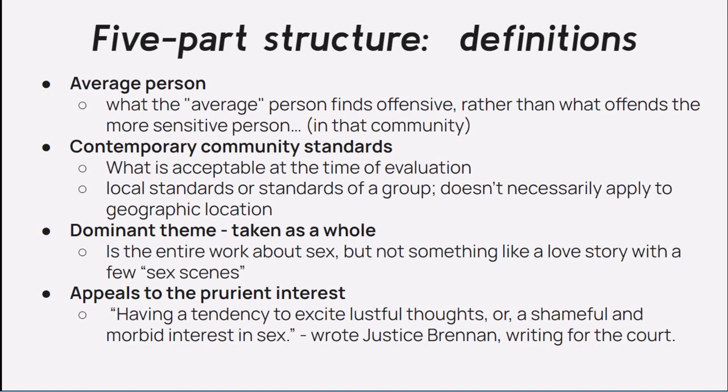Let's break down the five-part structure of the Roth case, because some of these terms can be confusing. Number one: the perspective of evaluation was that of an ordinary, reasonable person. Number two: community standards of acceptability were used to measure obscenity. Three: only works whose predominant theme was questionable were targeted. Four: a work had to be taken in its entirety. And five: an obscene work was one that aimed to excite individuals' prurient interest.